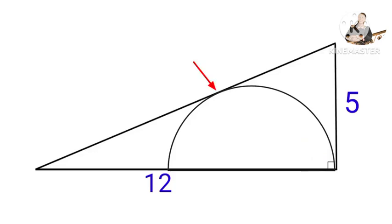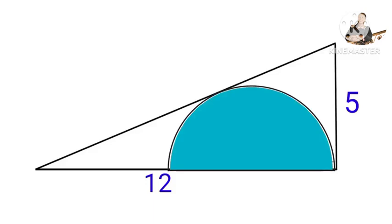One side of the triangle just touches the curve edge of the semicircle at one point. We need to find the area of the semicircle. Can you solve it? Where are we going to start from?